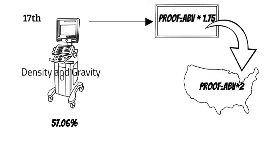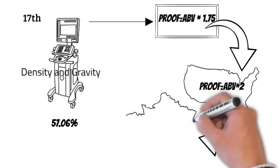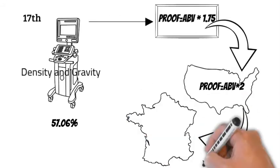French people also established a much simpler version of calculating proof, in which ABV equals alcoholic proof.